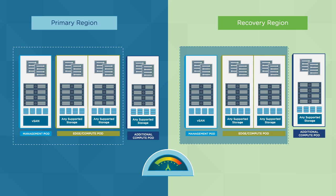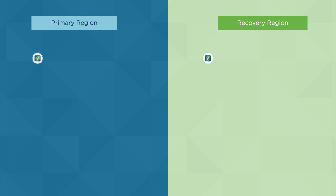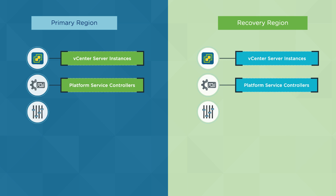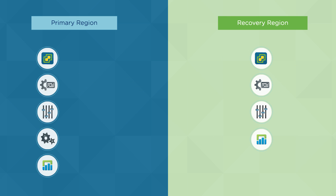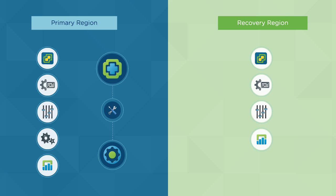Each region is deployed with a management and a shared edge and compute pod. Compute pods can be expanded or added to support additional business workloads. Region-specific instances of vCenter Server, platform services controllers, NSX managers, and vRealize Log Insight are also deployed and integrated between regions. In the primary region, vRealize Operations, vRealize Automation, and vRealize Business for Cloud components are deployed and configured to the recovery region.